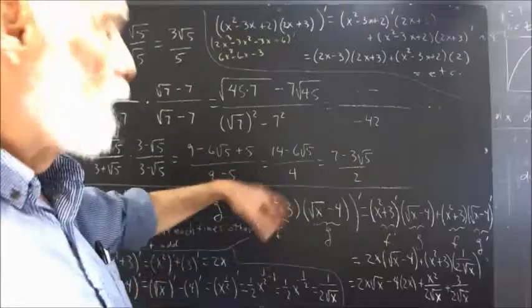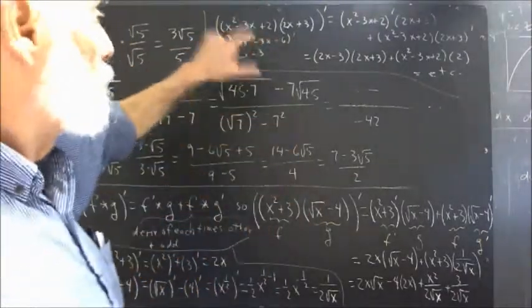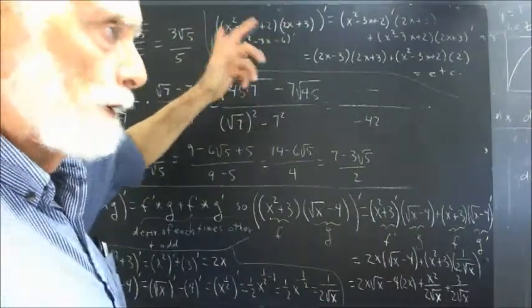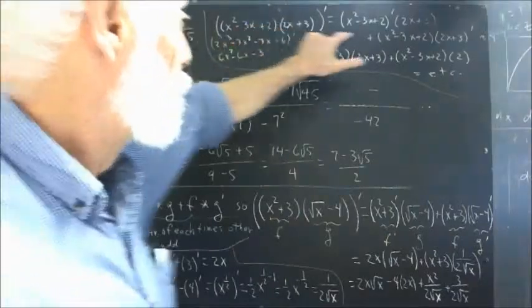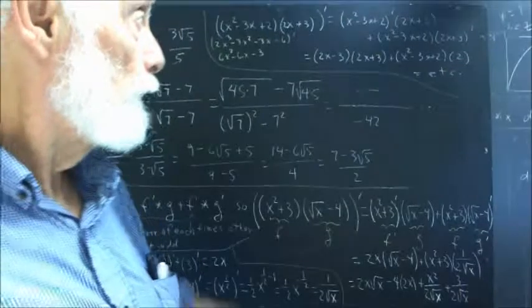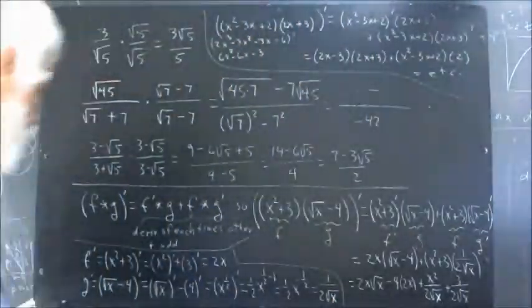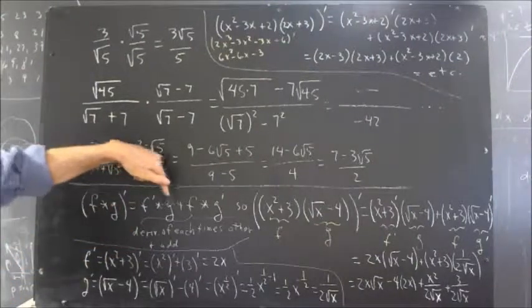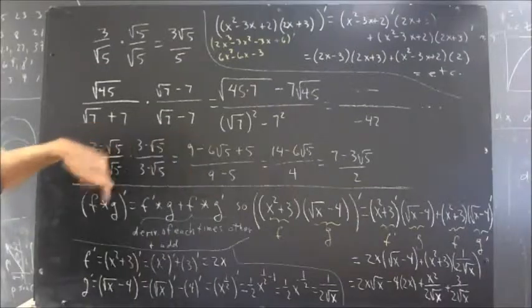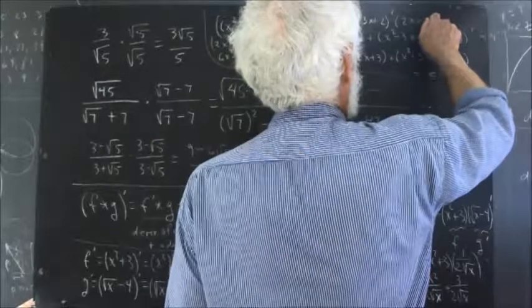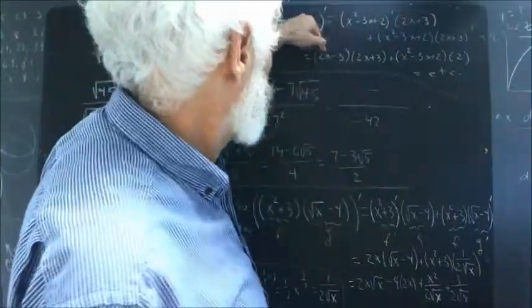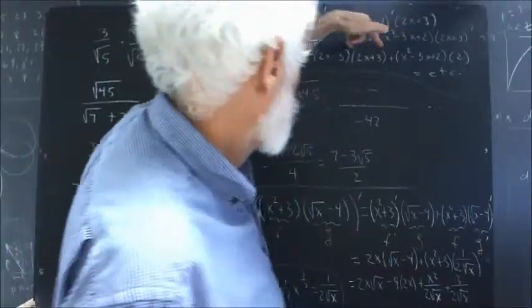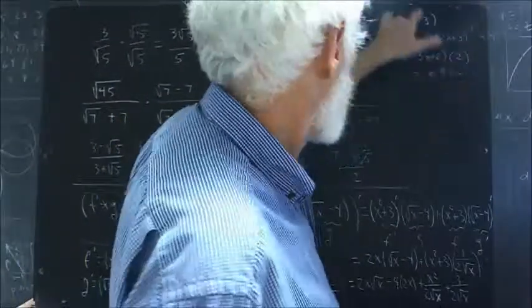We apply the product rule — and I hope I didn't say chain rule earlier; that's a different thing we'll see in the next class. The product rule says we take the derivative of the first and multiply it by the second function, then we take the first and multiply it by the derivative of the second function. Derivative of the first times the second, plus the first times the derivative of the second.